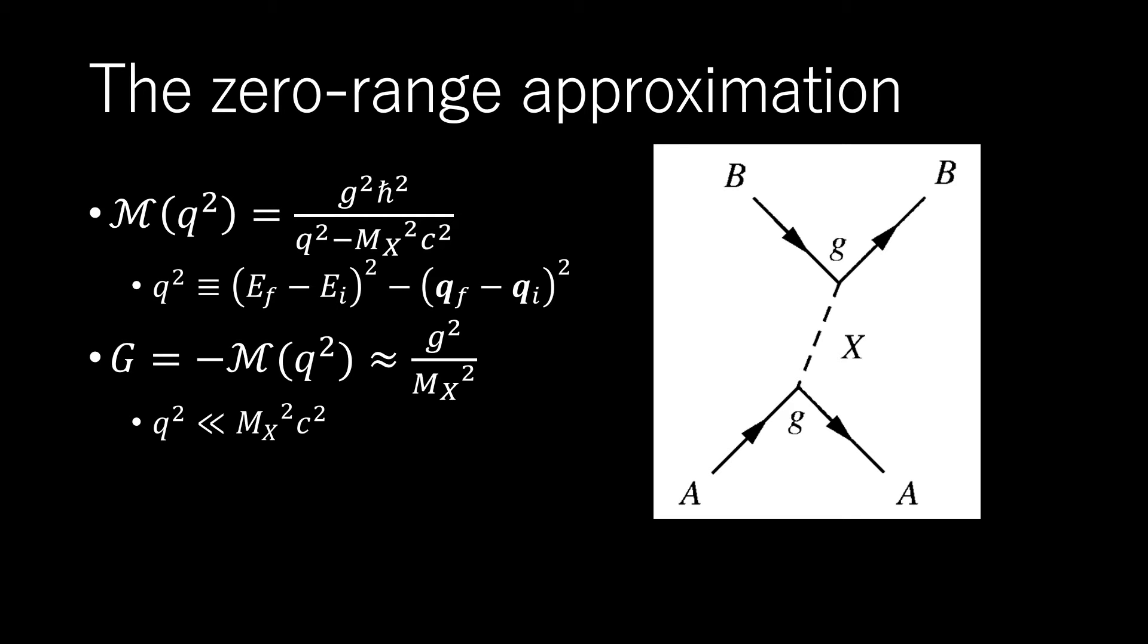In lowest-order perturbation theory, the probability amplitude for a particle with initial momentum QI to be scattered to a final state with momentum QF is proportional to the scattering amplitude M, where Q is the momentum transfer.